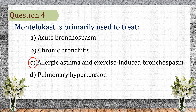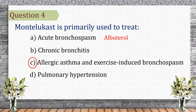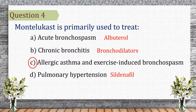Let's see the other options. Acute bronchospasm requires a short-acting beta-2 agonist, like albuterol. Chronic bronchitis is usually managed with bronchodilators. Pulmonary hypertension is treated with sildenafil or prostacyclin analogs.